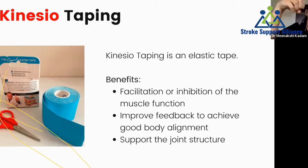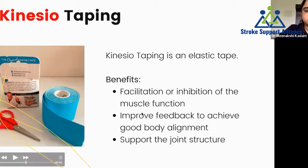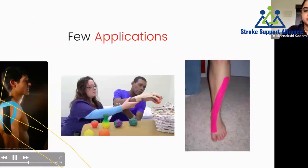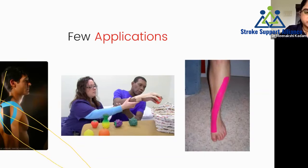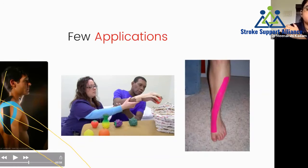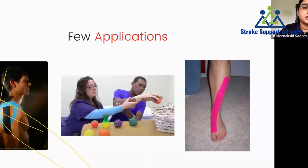Good alignment from kinesiotaping is essential for functional activities. You cannot pick up objects efficiently with a flexed wrist, but you can with proper extension and a good grasp — the tape supports joint structure as well. Some applications: first, shoulder subluxation, very common after stroke due to weakness. To support the ball-and-socket joint, the tape is applied in a vertical, horizontal, and Y-shaped manner. There are many technique variations specific to each condition. This prevents the joint from being continuously pulled down by gravity, which causes pain and weakness.